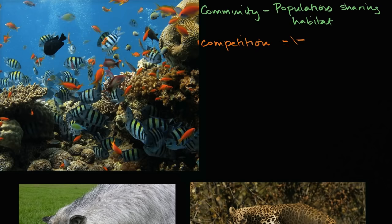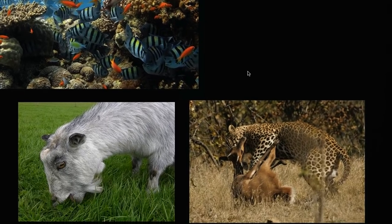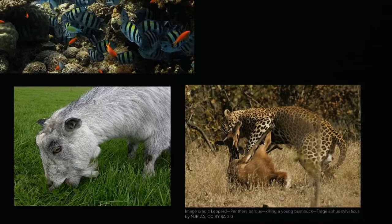The next form of inter-specific interaction is predation. This is when one population eats another population. You might associate predation with images like a cheetah hunting — in this case, a young bushbuck. But this is not the only form of predation. This picture of a goat eating grass is also predation. It's not as violent, but it is still predation, because you have one species eating another species.